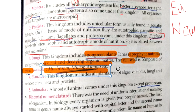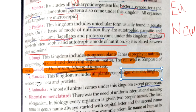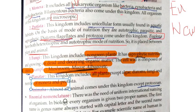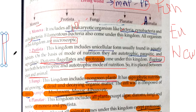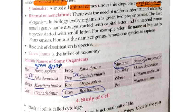Plantae includes all plants except algae, diatoms, fungi, and members of Monera and Protista. Animalia includes all animals except protozoa — protozoa comes under Protista. Remember: P for Protozoa goes with P for Protista.